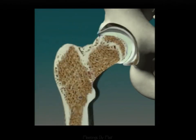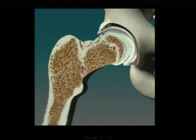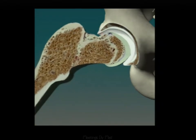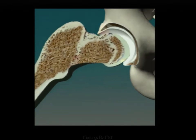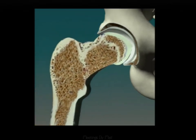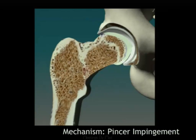This movie shows a pincer deformity. There is normal head-neck offset, but acetabular over-coverage creates a lever arm effect where the normal femoral neck impinges on the labrum. You see cartilage damage superiorly, but also inferiorly during normal motion.